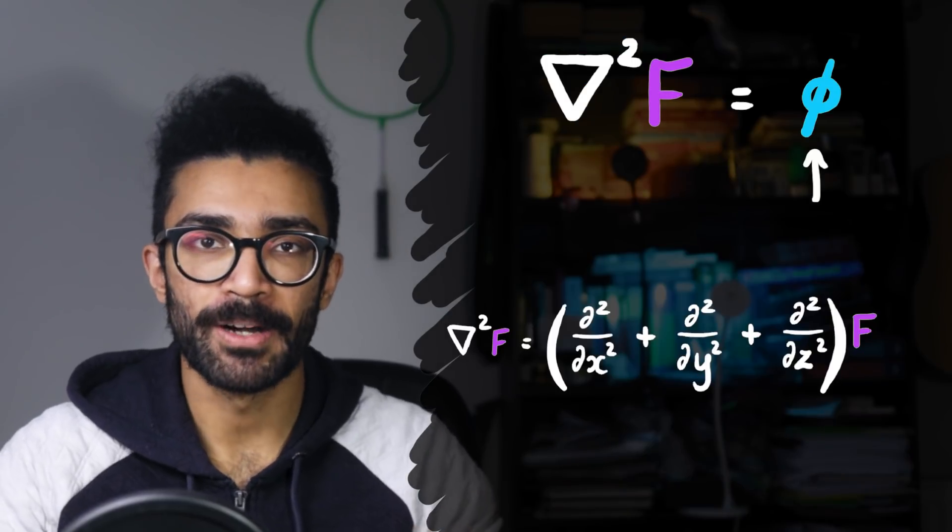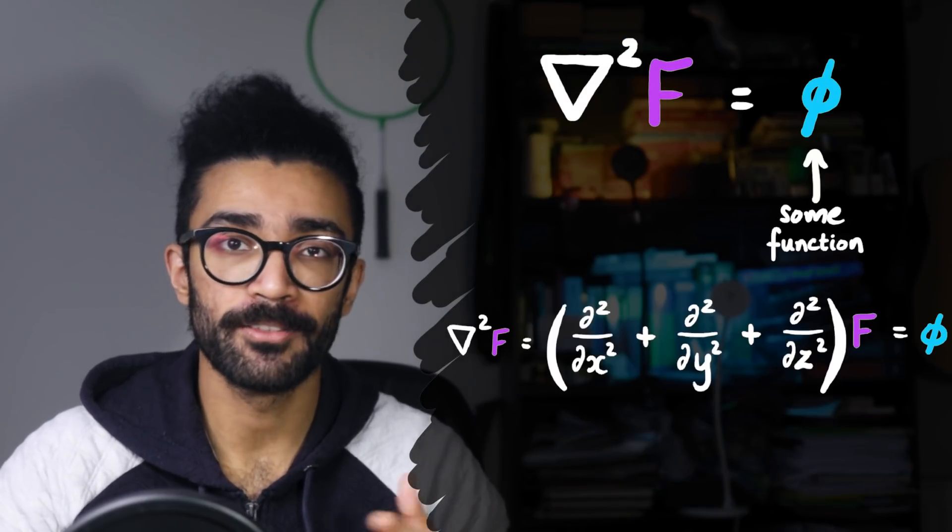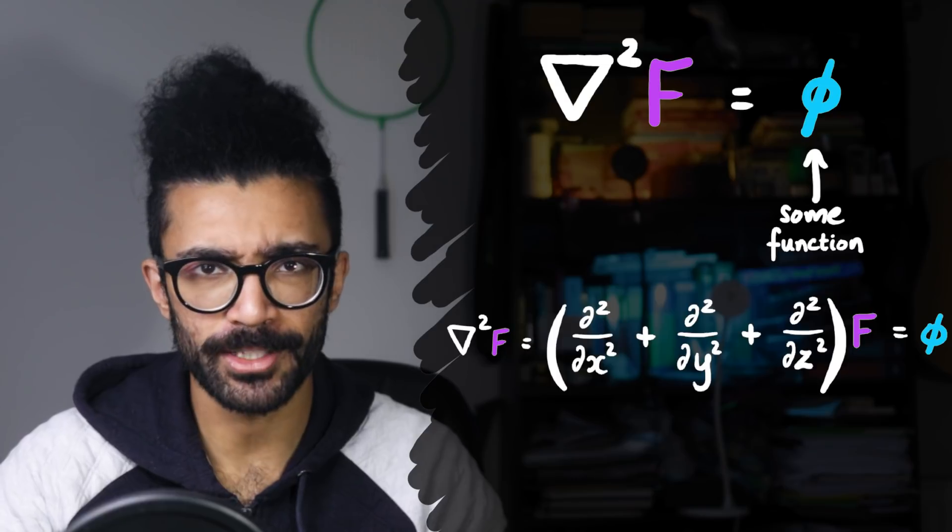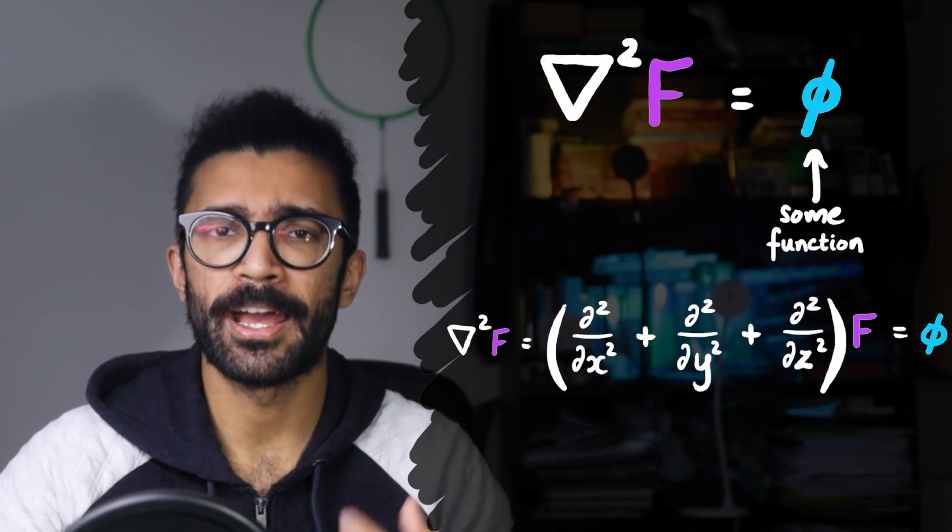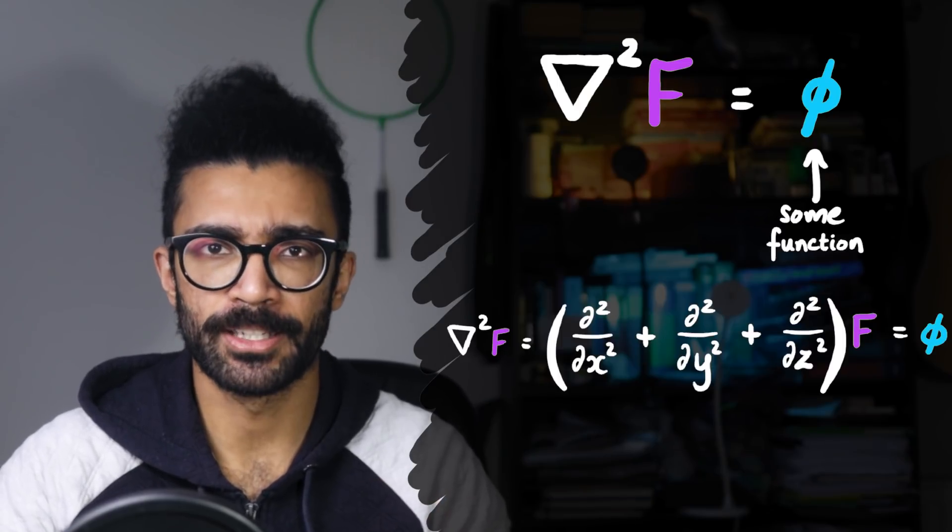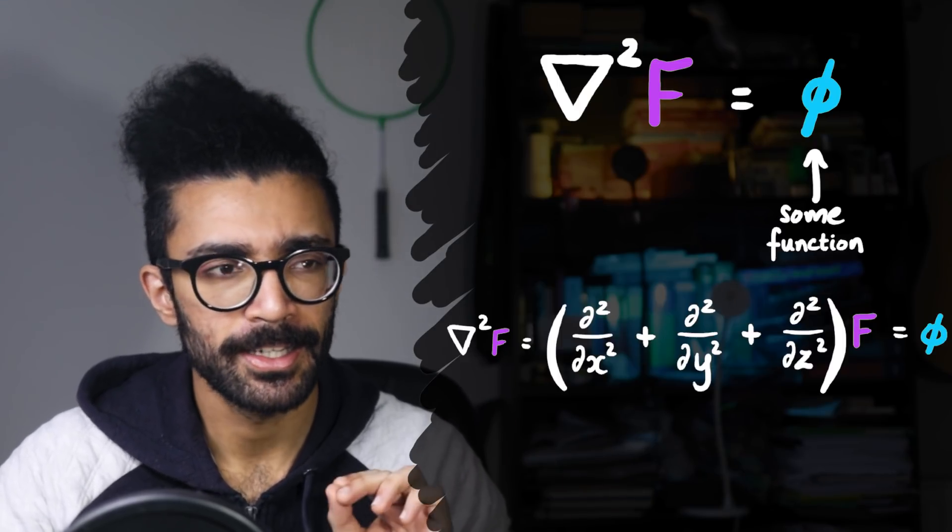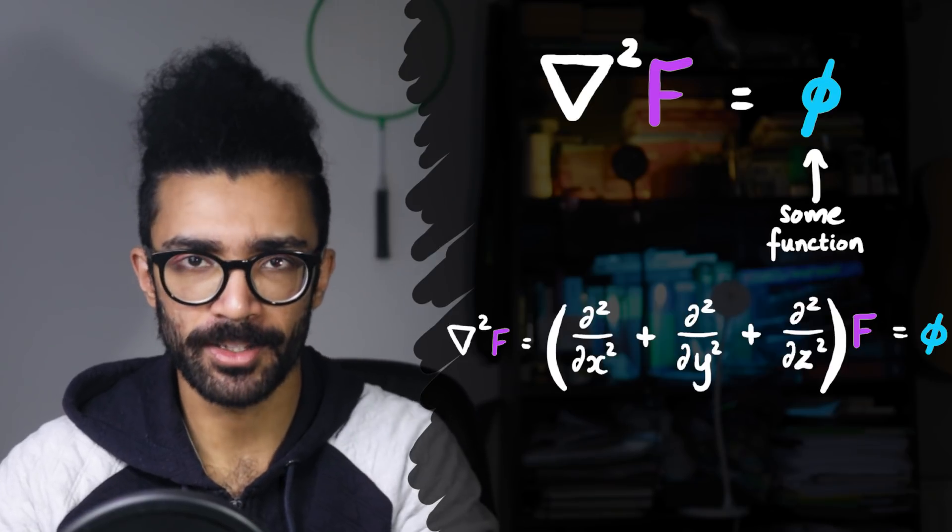And on the other side of our Poisson equation, we have some other function. We haven't really specified what this function is, but all we're saying is that in this particular case, the function f has to be such that the second derivatives, as we've seen on the left-hand side, have to all add up to give us this other random function, phi.